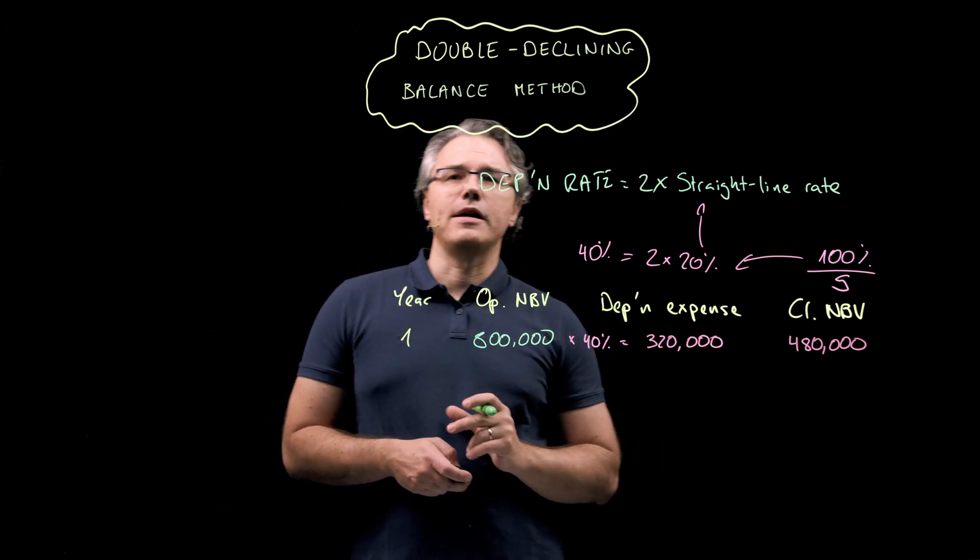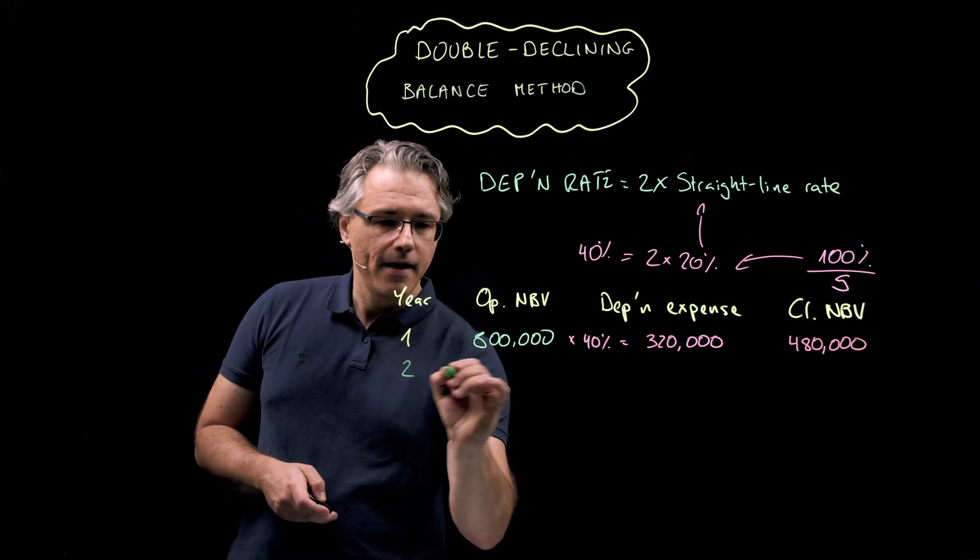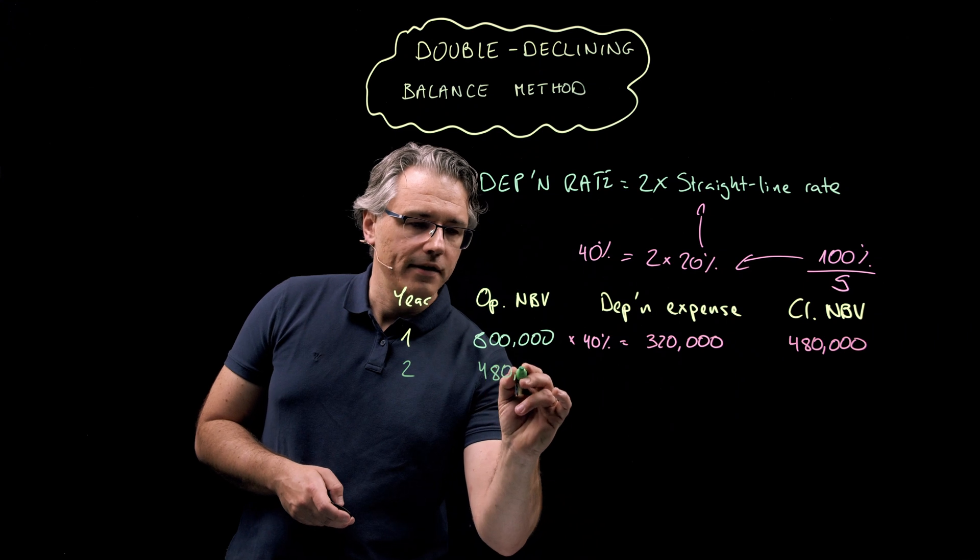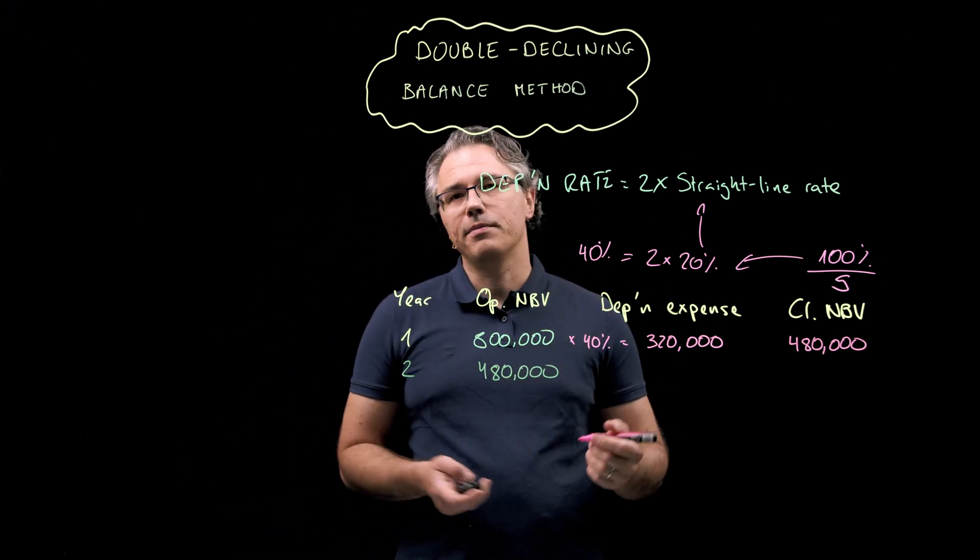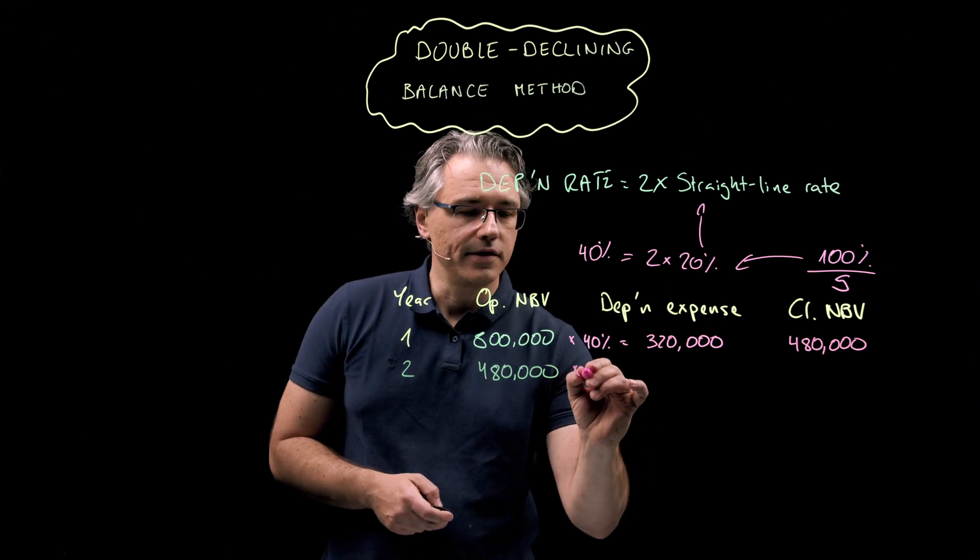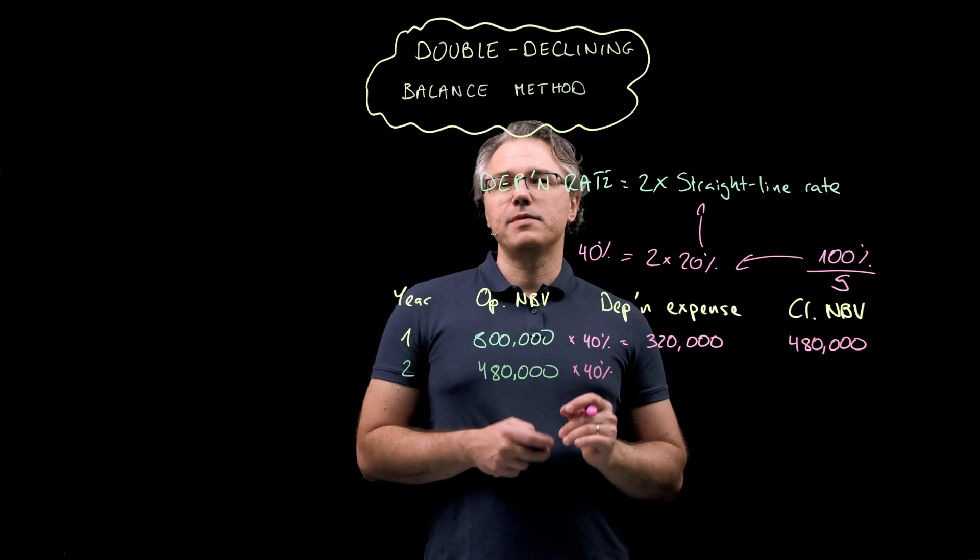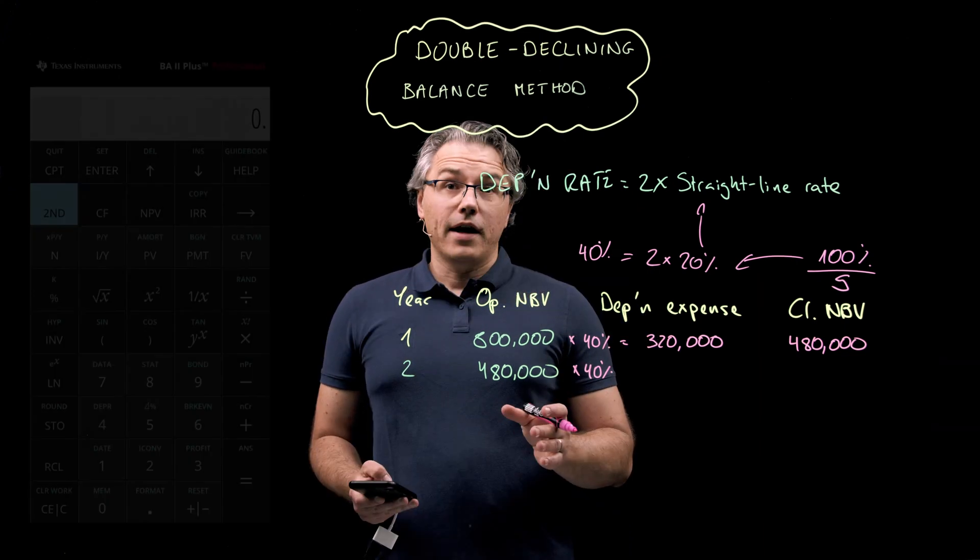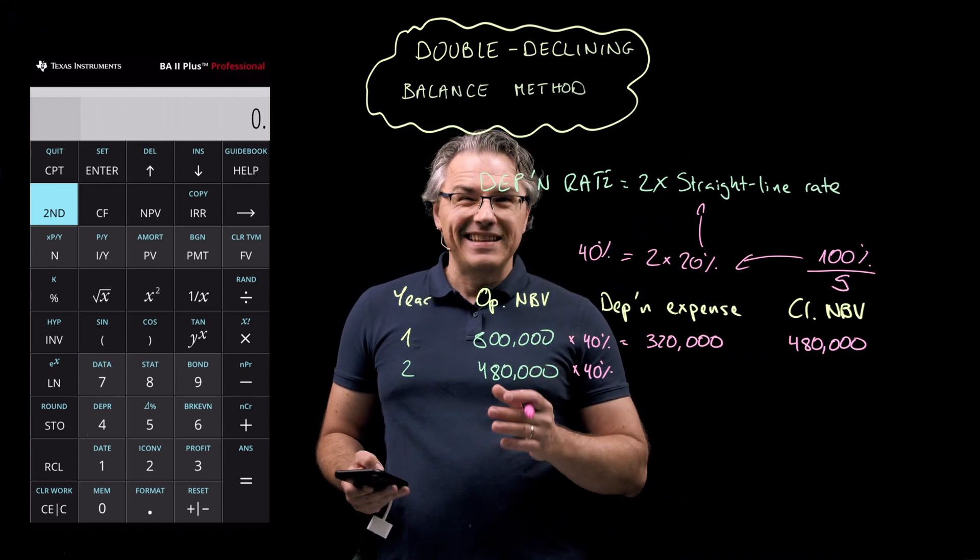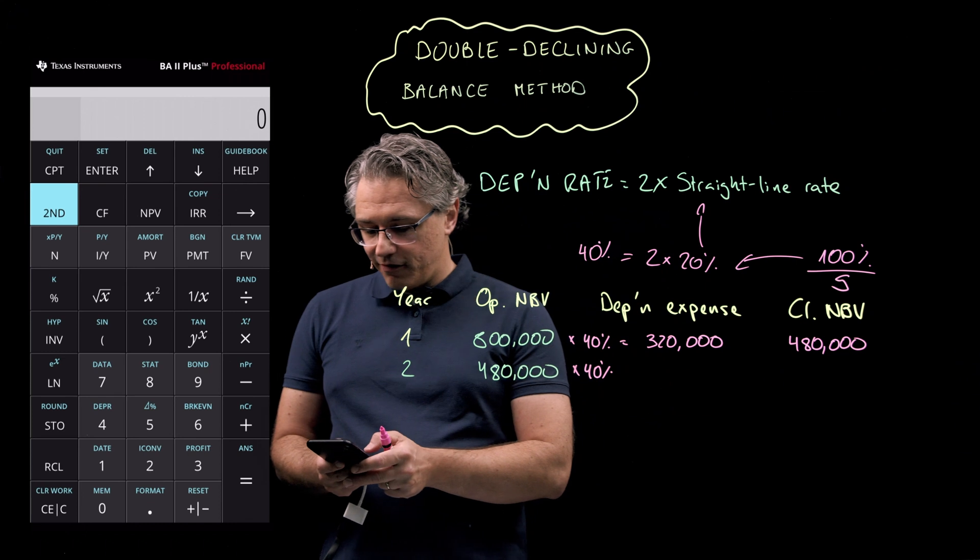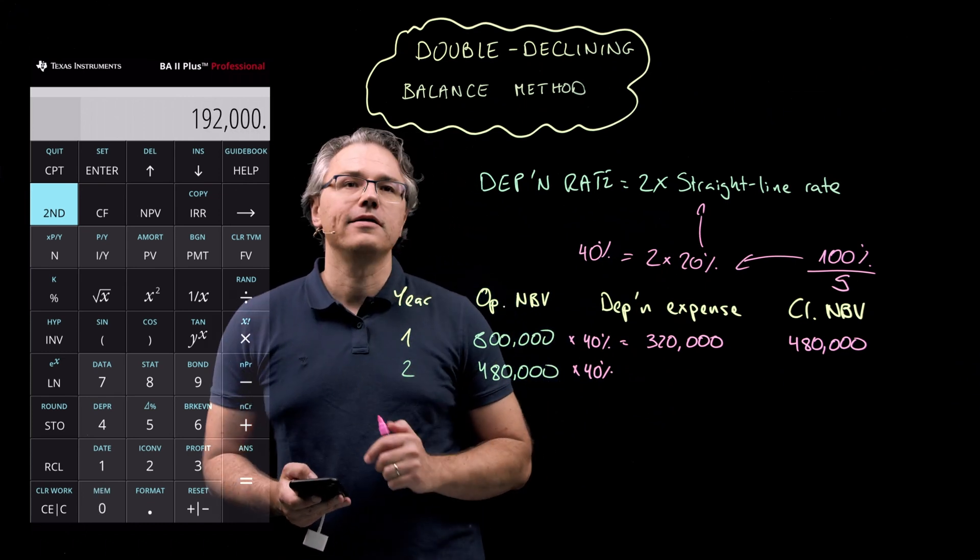Now, this 480,000 naturally becomes the opening carrying amount for year two. So, 480,000. And I am once again going to apply 40% to this, so as to compute the depreciation in respect of the year. 40% of 480,000 is, I'm going to use the calculator, 0.4 times 480,000.